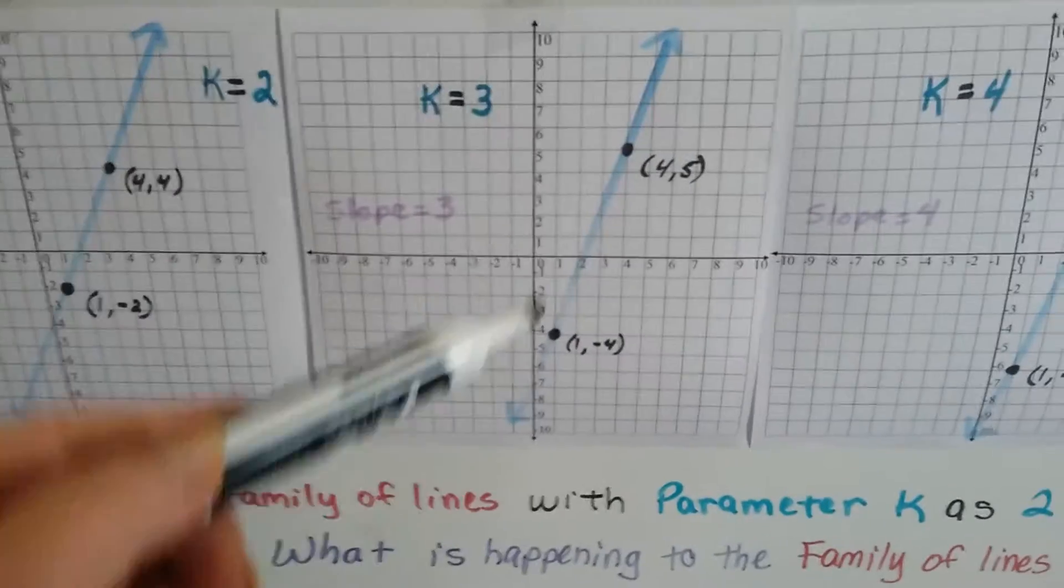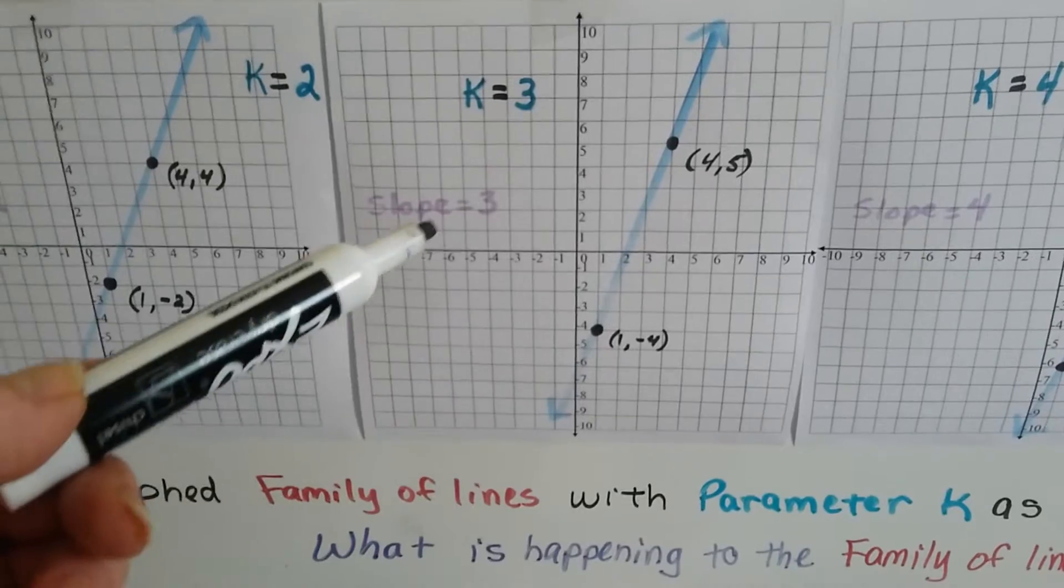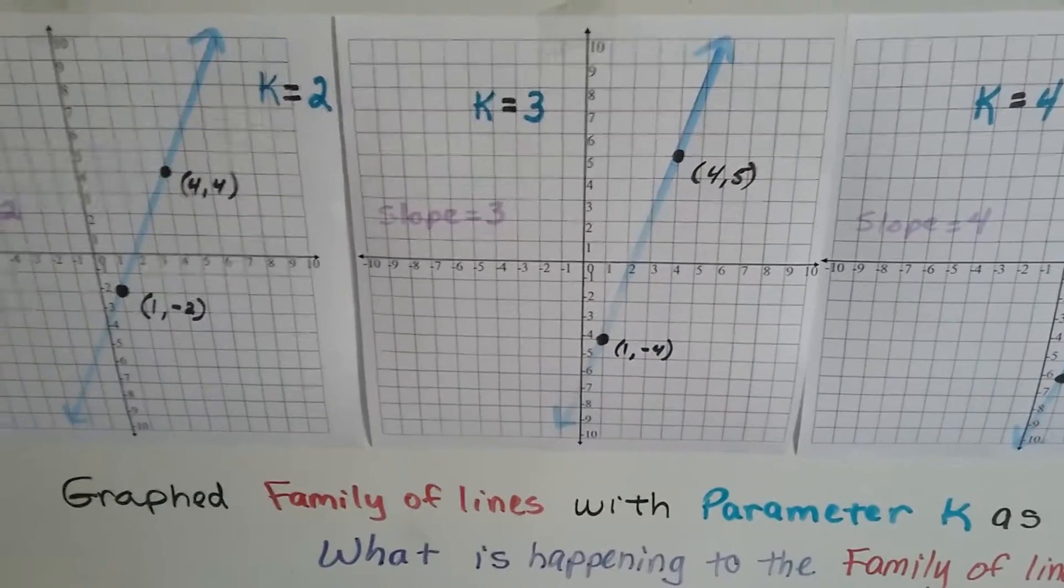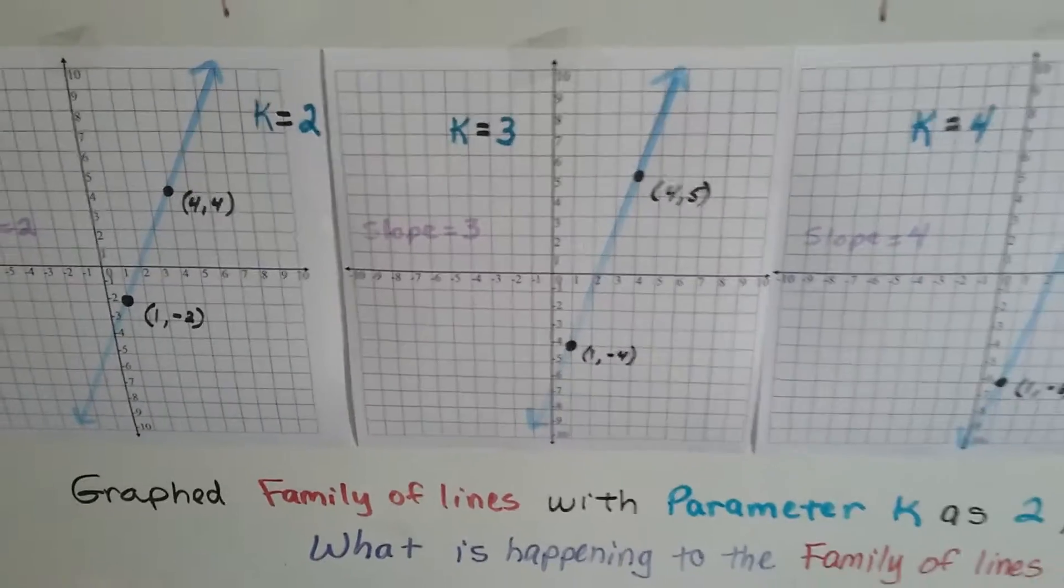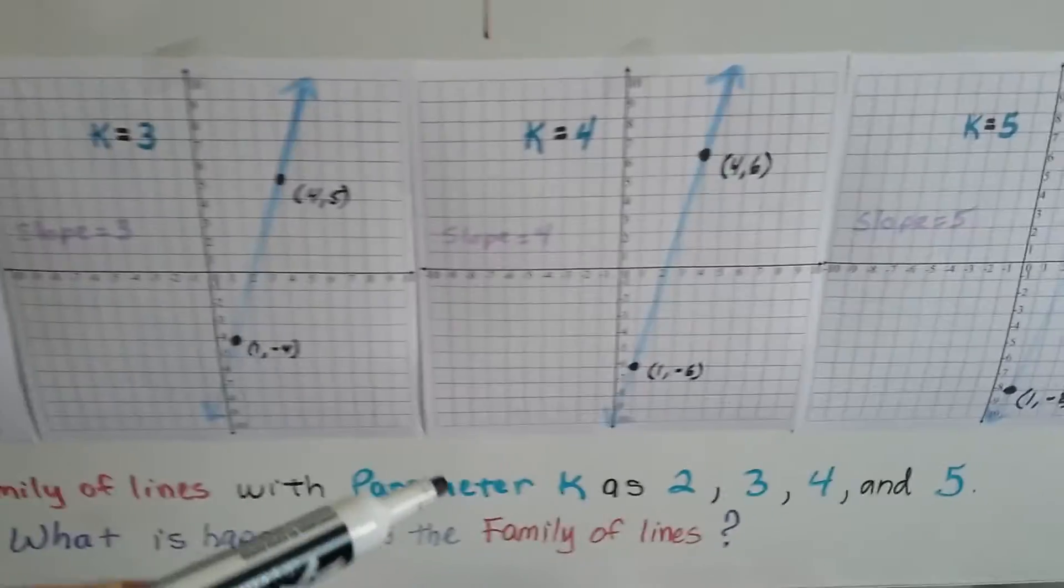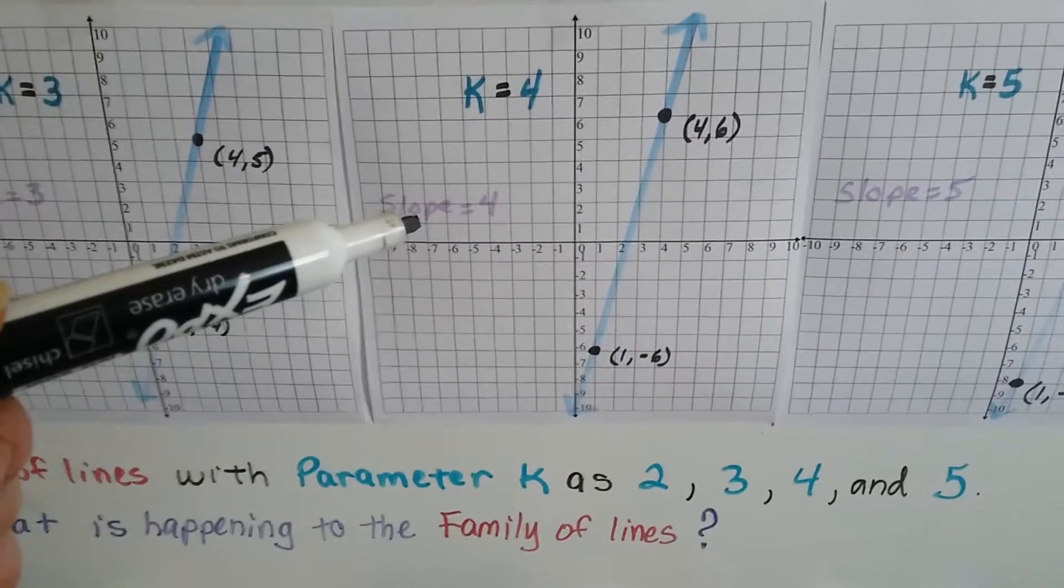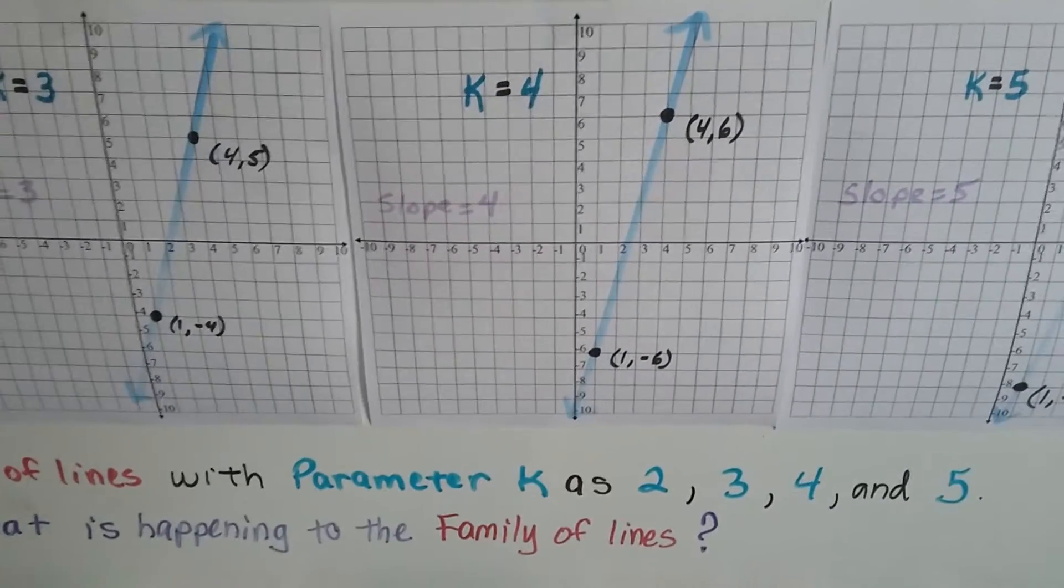And in this one, when we count the rise over the run, the slope comes out to equal 3, and this is when k is equal to 3. And in this one, when you count the rise over the run, we get that the slope is equal to 4, and look, that's where k equals 4.